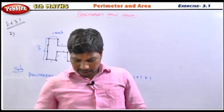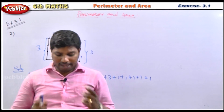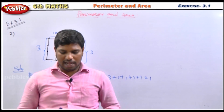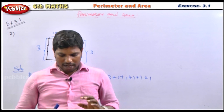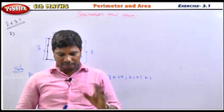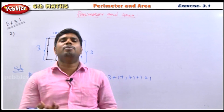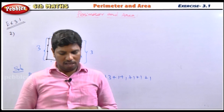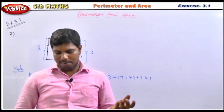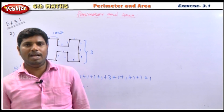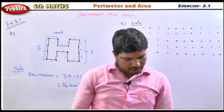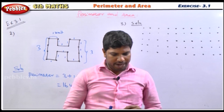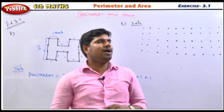Draw a different shape with a perimeter of 8 units in the following dotted sheet. We will draw different shapes with a perimeter of 8 units on the dotted sheet.